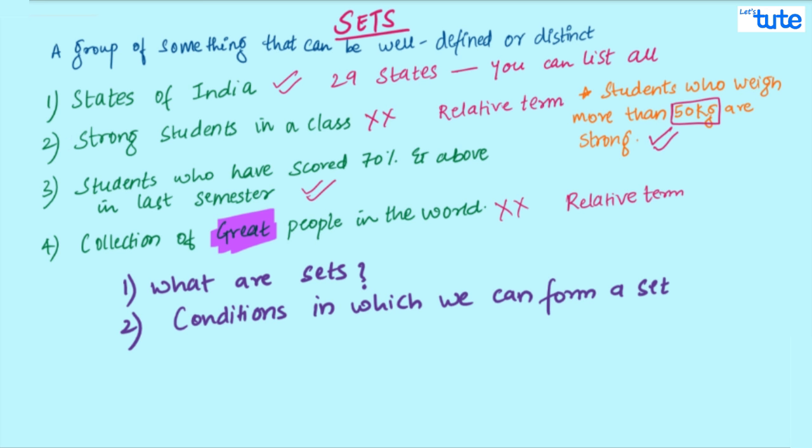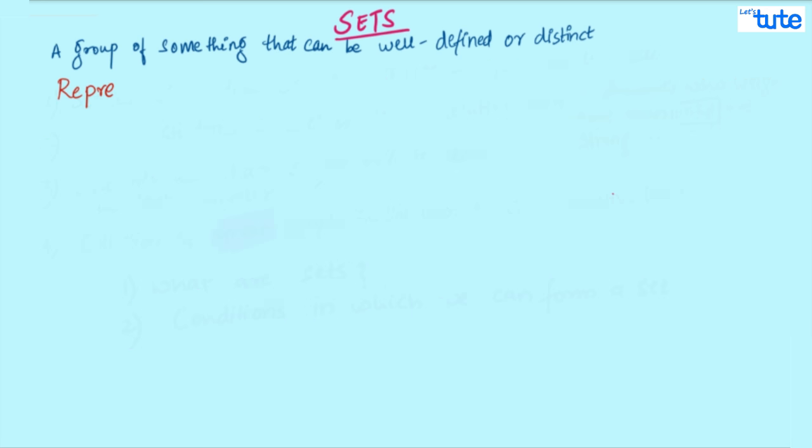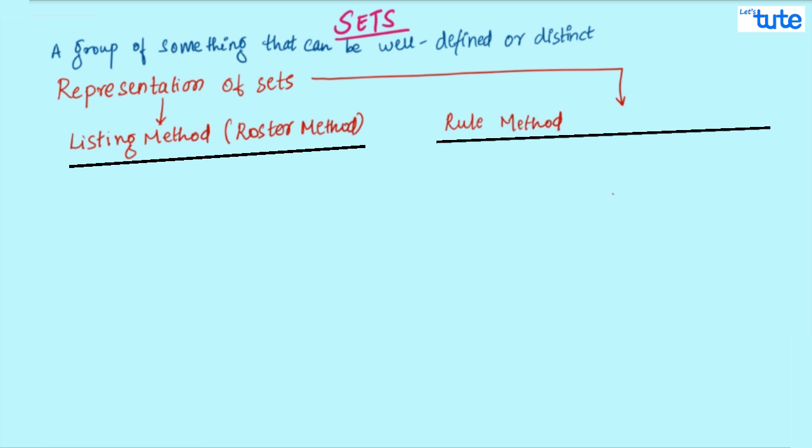Let's move to the next step. So, how do we present these sets? There are two different ways to write these sets. One is listing method or also known as roster method. The second is rule method or known as set builder method.